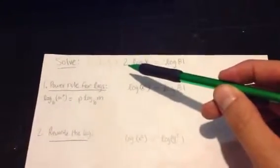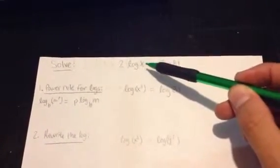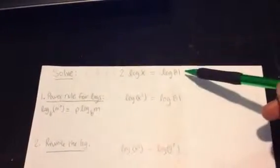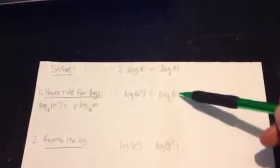So, in using that, you can move that 2 up above to make that x squared right here, as shown in this problem right here. Notice that the log of 81 has not changed just yet.